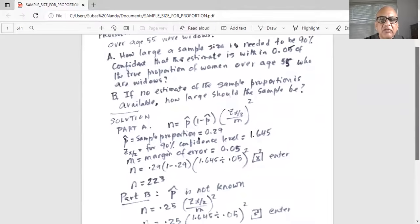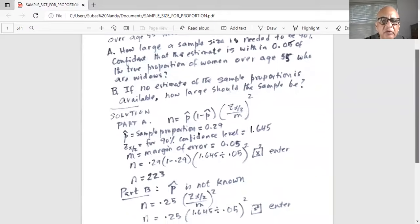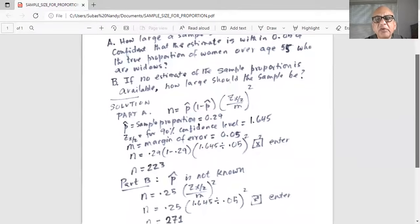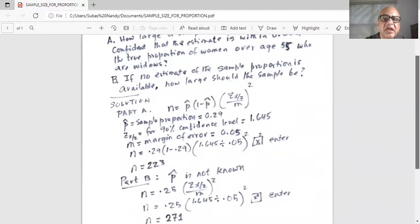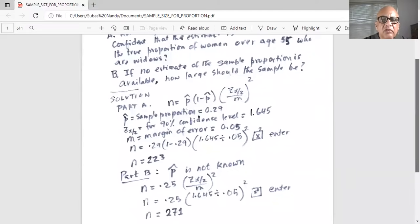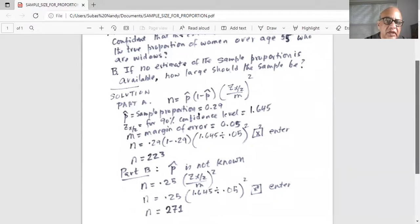Part b says if no estimate of the sample proportion is available how large should the sample be? In this case p hat is not known. So what will we do? The textbook says if p hat is not known we will assume p hat is 0.5.